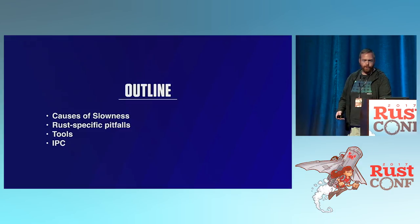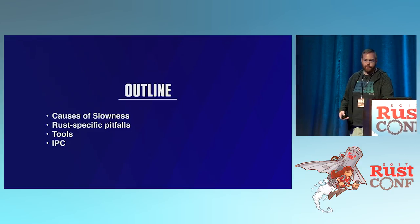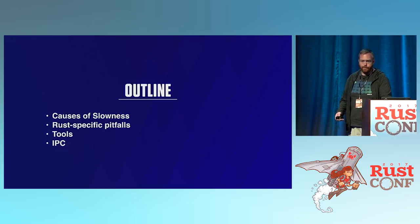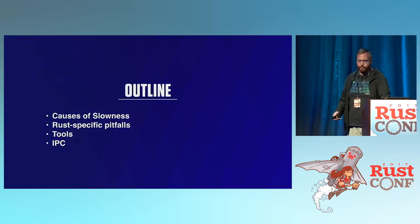Here's the outline of the talk: first, we're going to talk about some causes of slowness in your programs, some Rust-specific pitfalls, tools, and then we're going to talk about a great measurement called IPC.